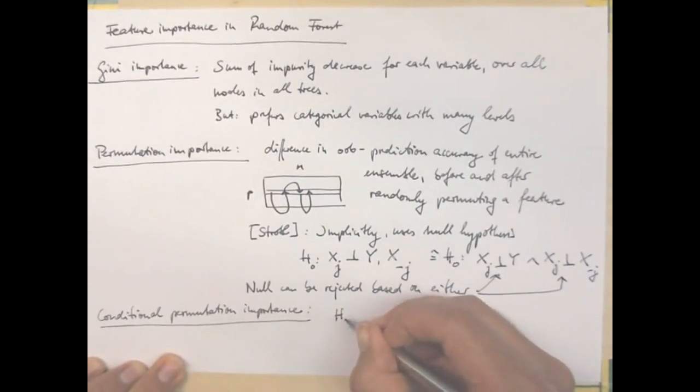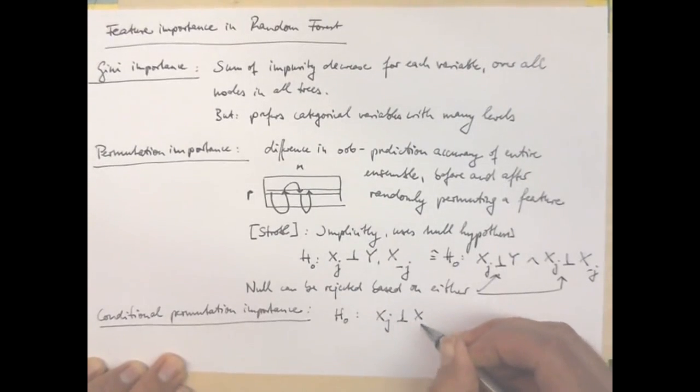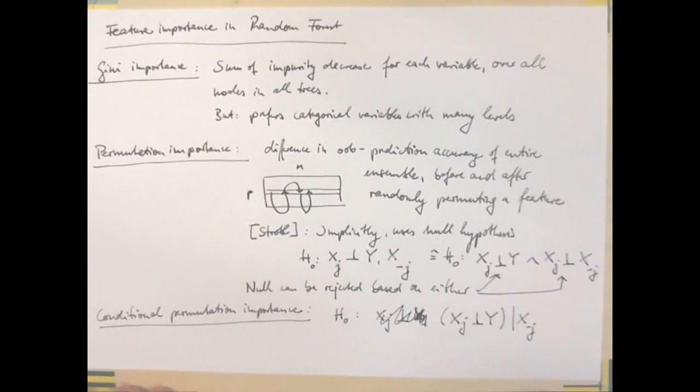And this is why she and her co-authors propose a conditional permutation importance, which uses the correct null hypothesis, namely that X_J is independent of the labels. X_J is independent of the labels, and now the whole statement here is being conditioned on the values of all other features. And practically this means that you don't want to permute all entries of this J feature, but only those entries that have similar values for the remaining features.